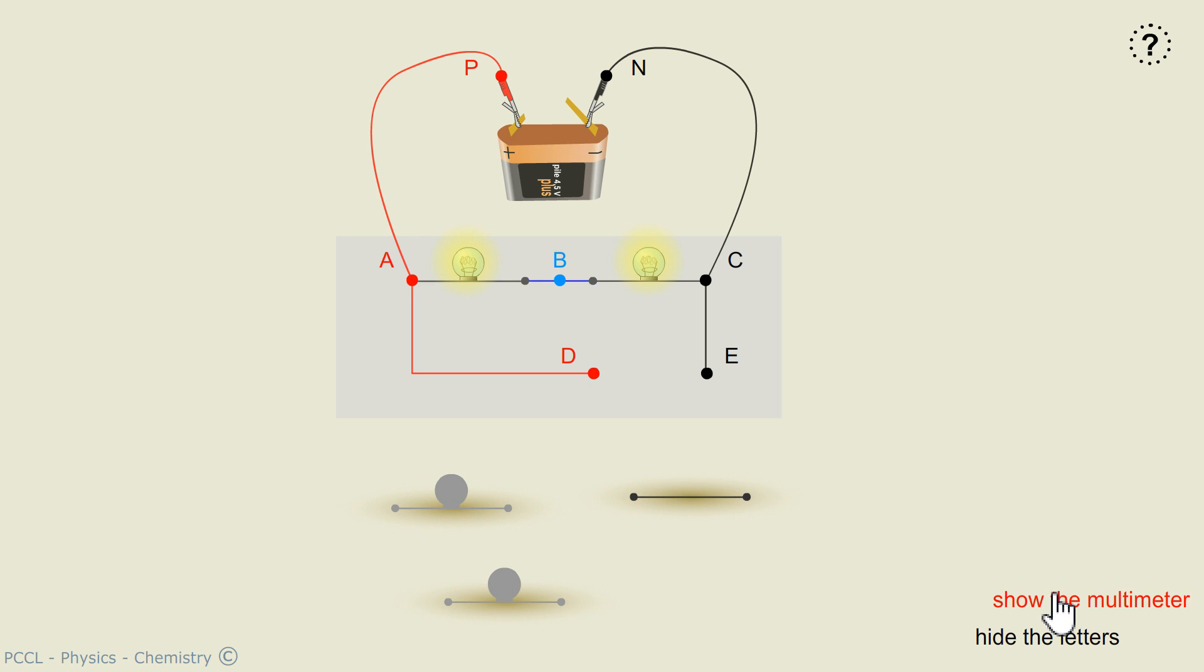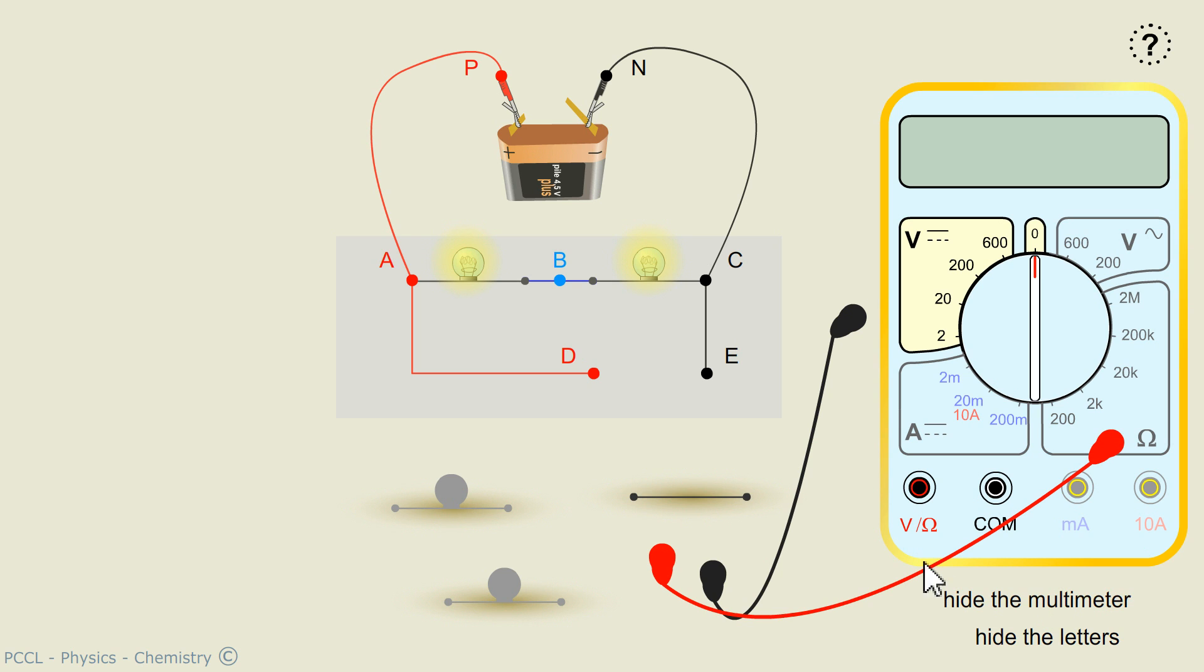We will use the multimeter as a voltmeter. So, the COM terminal, which is the terminal common to all the measurements, I use it systematically. For the other wire, I will plug it on the terminal where there is the letter V.